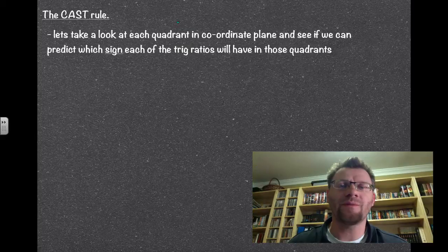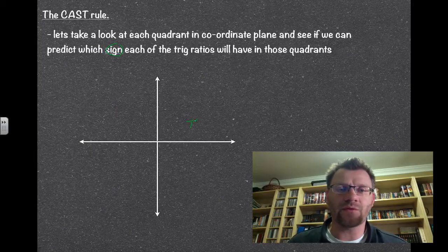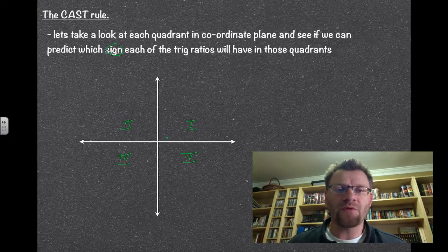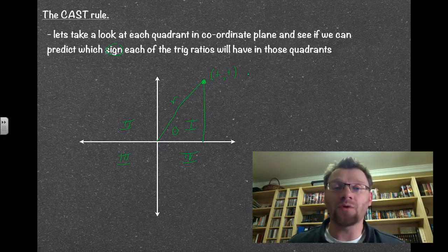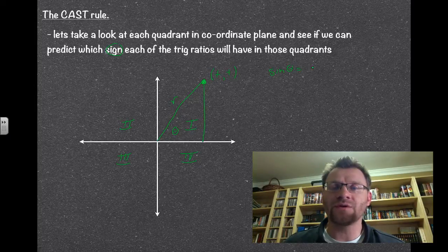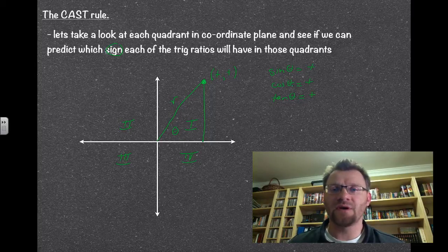The next thing we're going to talk about is something called the CAST rule, which is going to be quite helpful in trigonometry. Let's take a look at each quadrant in the coordinate plane and see if we can predict which sign each of the trig ratios will have. In quadrant 1, the x value is positive and the y value is positive, so sine, cosine, and tan are all positive, because any ratio will yield a positive answer.